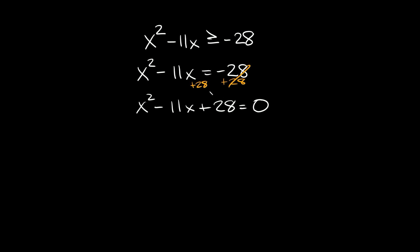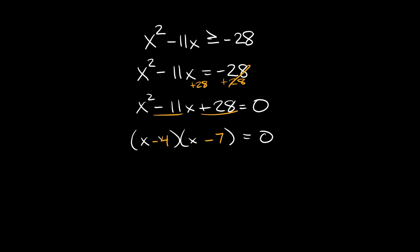We can factor this quadratic. We split it into x times x, and we need two numbers that add up to negative 11 and multiply to positive 28 — that would be negative 4 and negative 7. So our two solutions are x is equal to 4 and x is equal to 7. These are the two numbers we're going to graph on a number line.